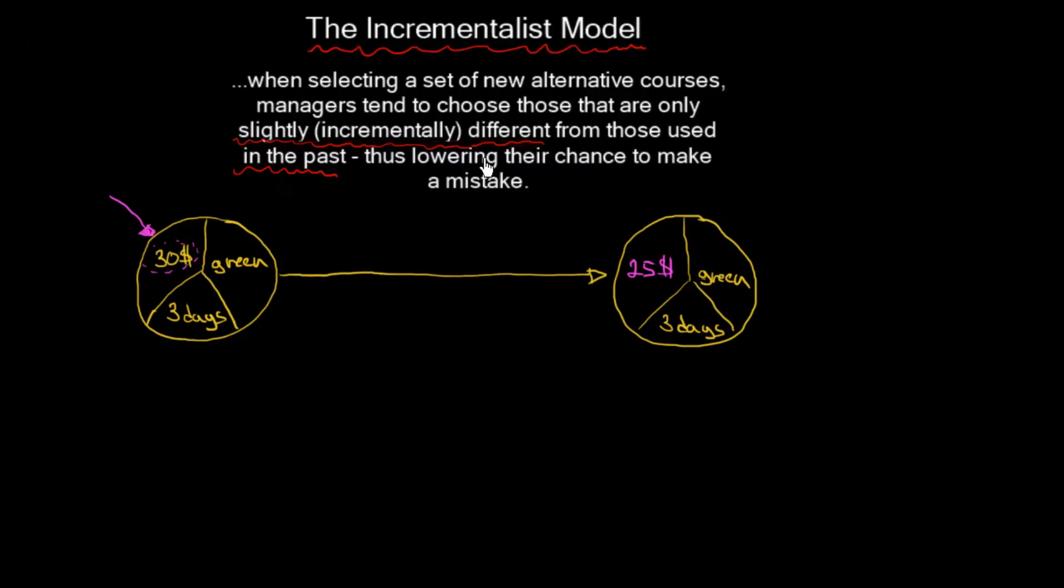Now we can continue with the incrementalist model and make new decisions and redesign the product. You can imagine that if we make a lot of incremental decisions—say, 10 such slight changes—our product can look really different.